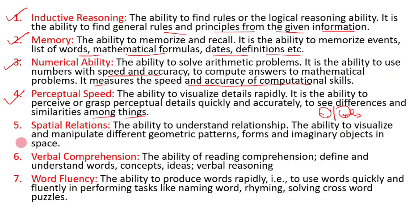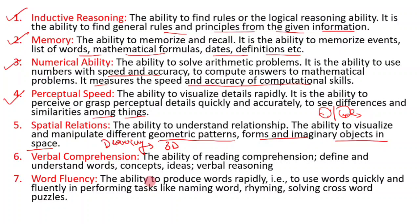The fifth factor is spatial relations — the ability to visualize and manipulate different geometric patterns, forms, and imaginary objects in space. For example, drawing a 3-dimensional picture, making a 2D or 3D photo, or understanding how to use space — as in architecture — all relate to this ability.